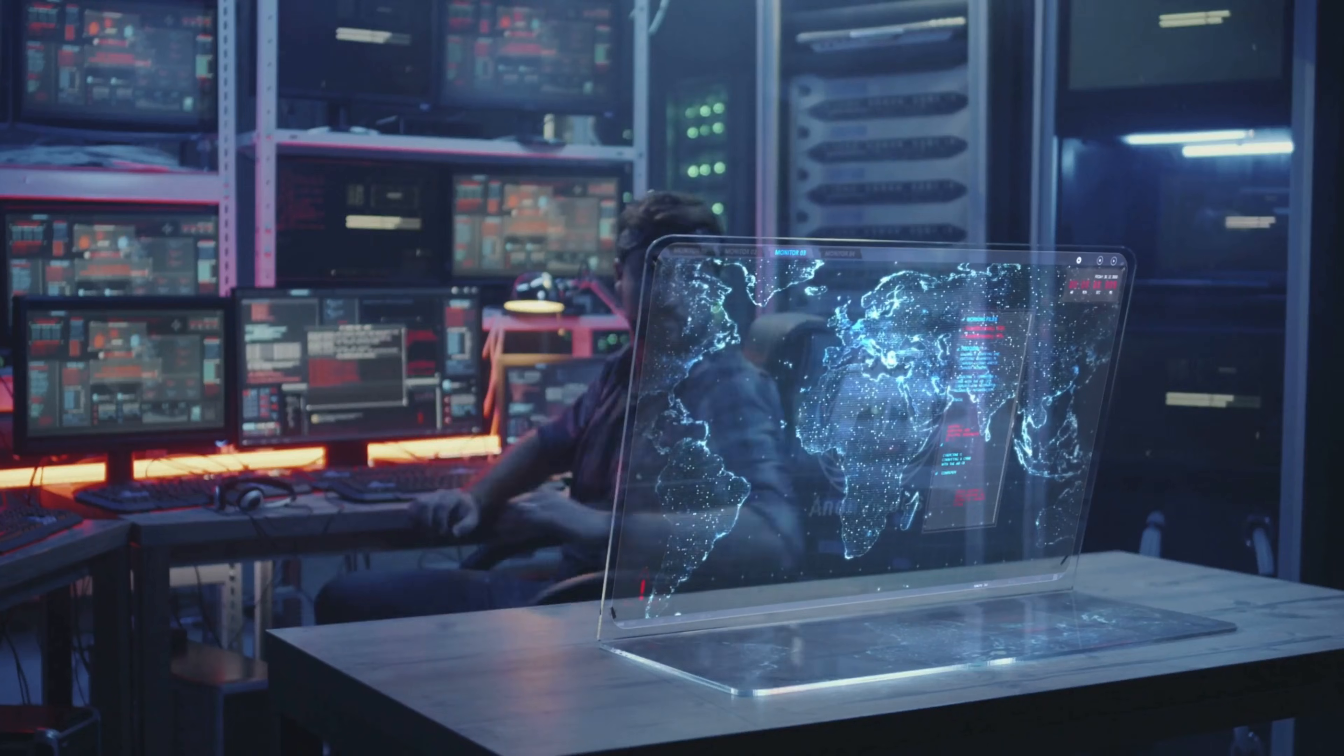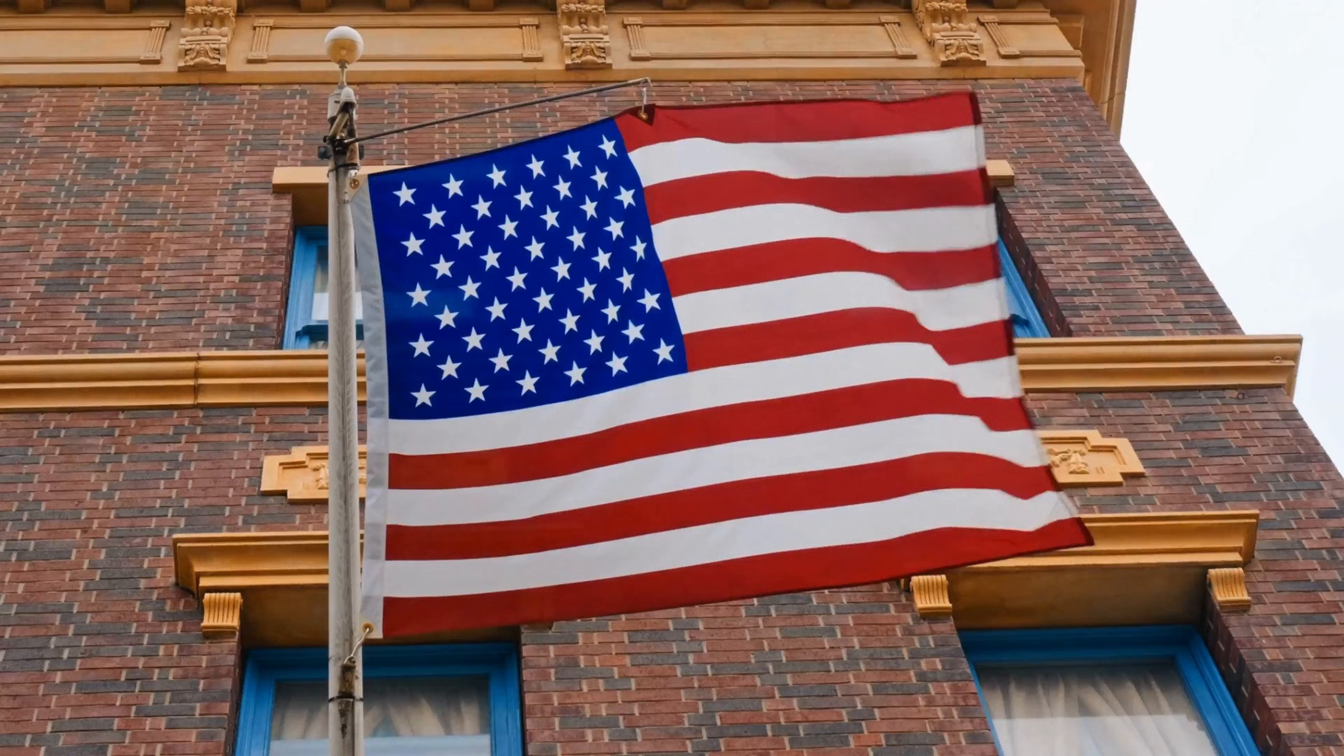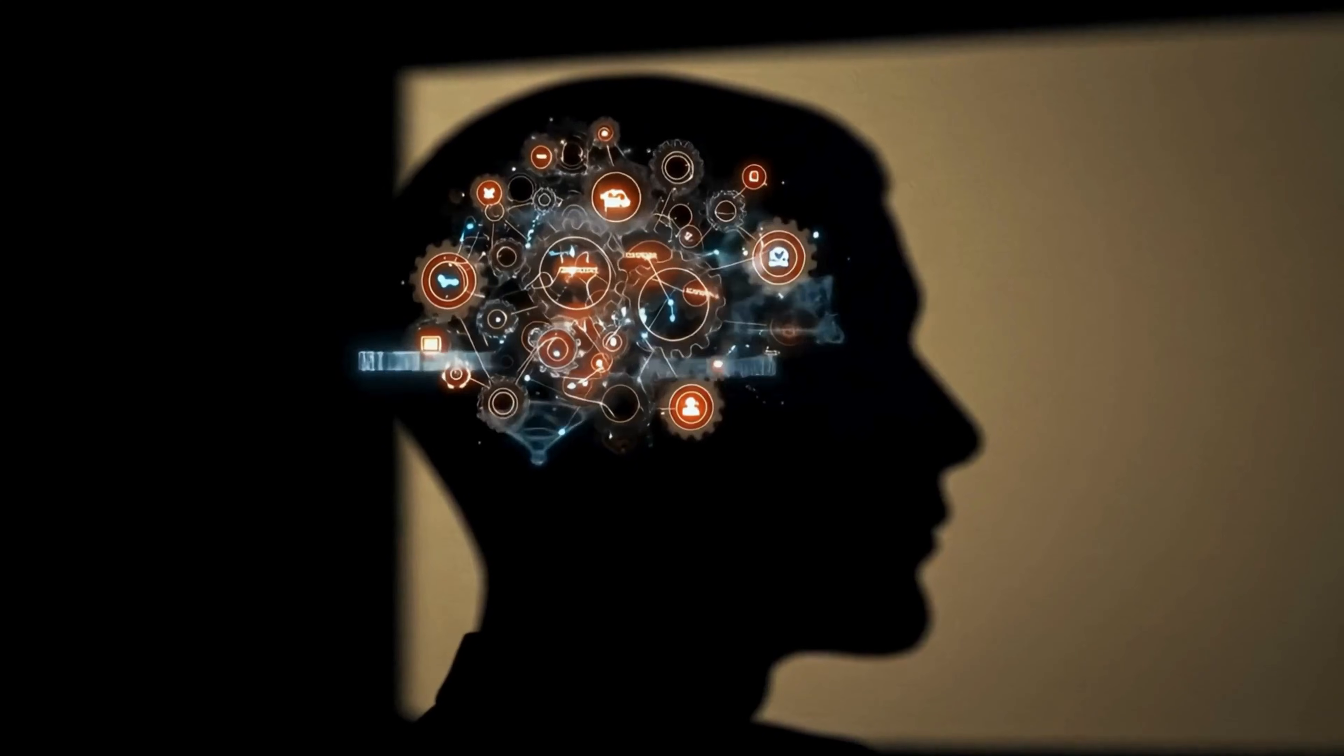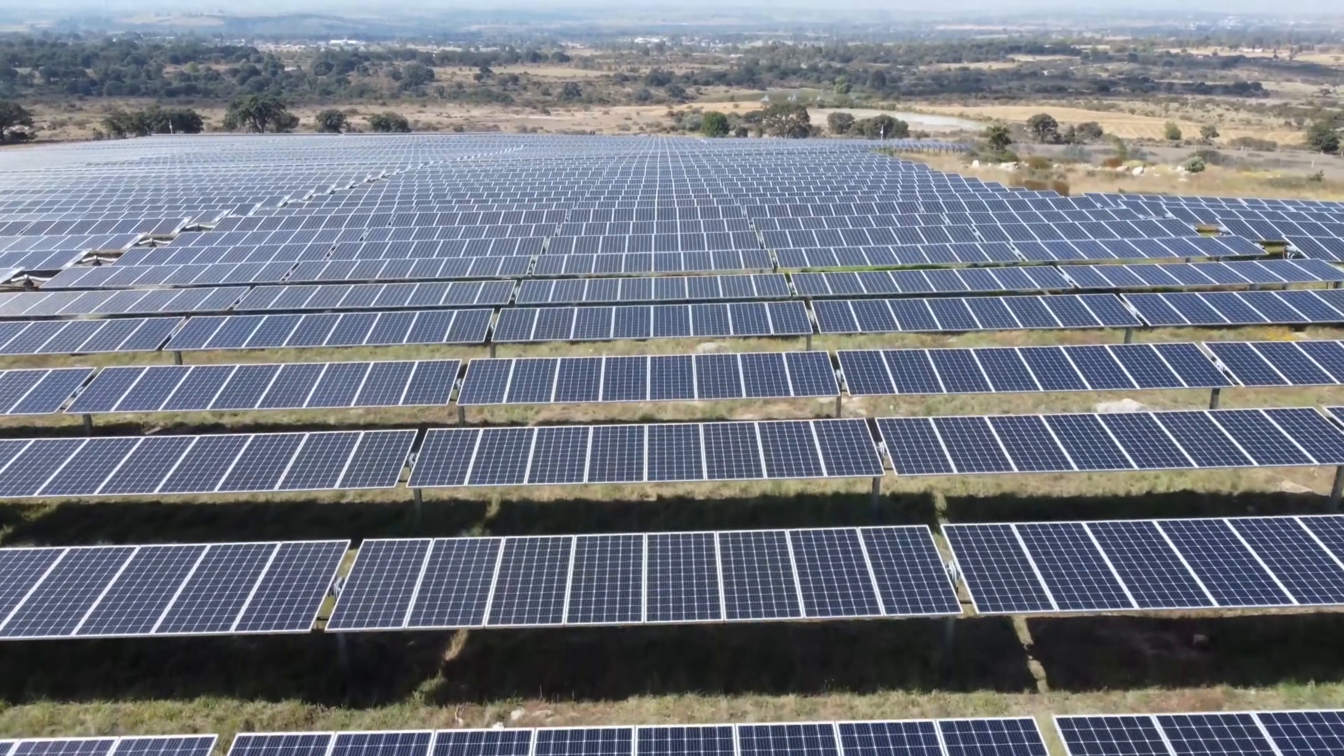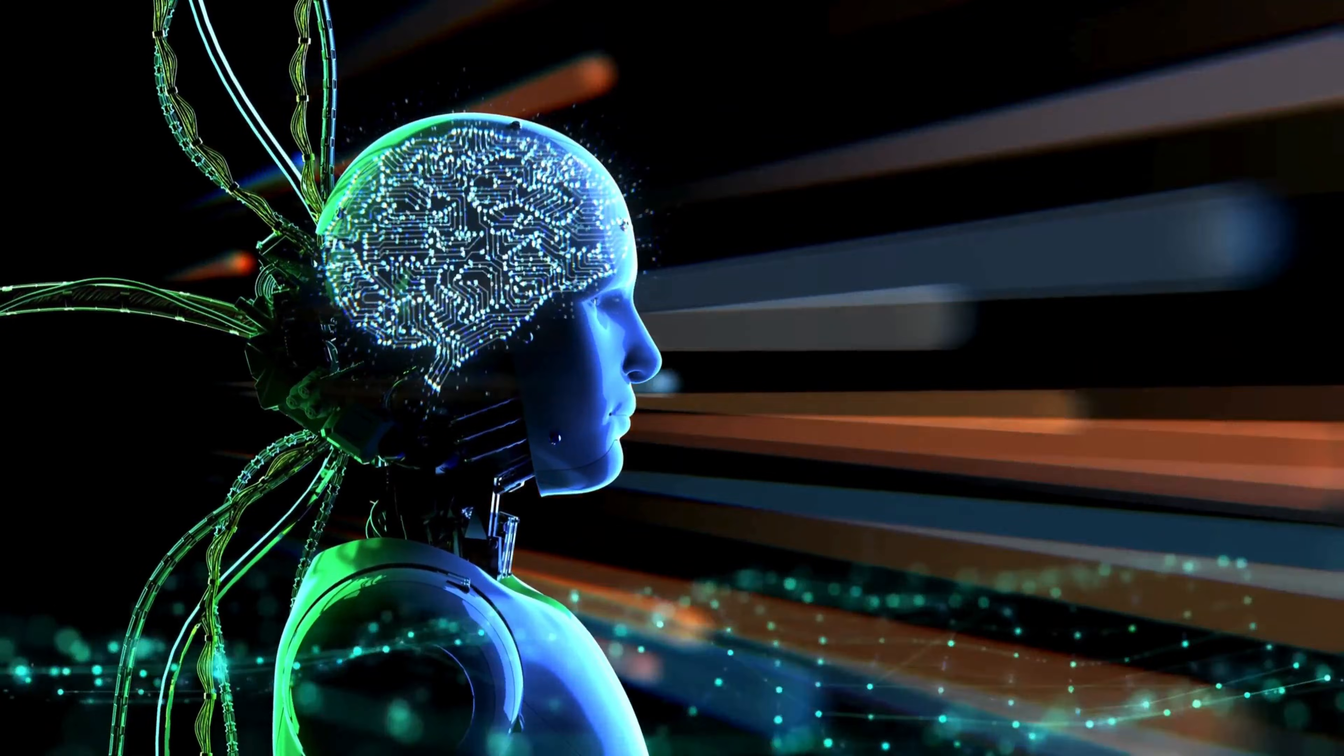History teaches us that technological supremacy defines civilizations. Britain ruled the waves because they mastered steam power. America dominated the 20th century because they led in aerospace and computing. The 21st century is being shaped right now by who controls artificial intelligence, quantum computing, and advanced manufacturing. The world being built isn't theoretical. It's operational.